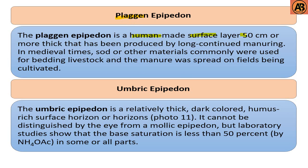The next one is the plagen epipedon. The plagen epipedon is a human-made surface layer 50 centimeters or more thick that has been produced by long-continued manuring. In medieval times, sod or other materials were commonly used for bedding livestock, and the manure was spread on the fields being cultivated.